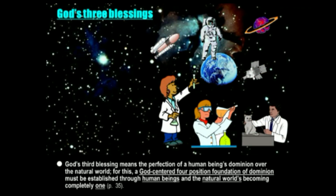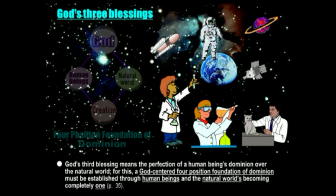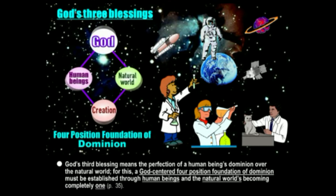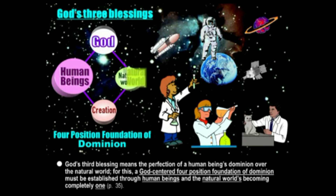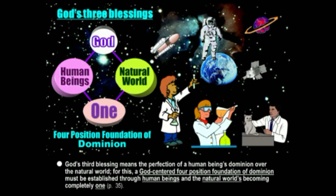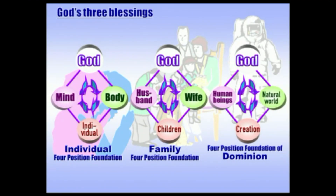The third great blessing means the perfection of the human being's natural dominion or stewardship over the natural world. For this to happen, we need another God-centered four-position foundation, where human beings and the natural world come together in complete oneness and create a world where God can truly dwell and find joy. So fundamentally, the three great blessings are: first, to mature individually and become a person of true love; second, to create a family with God at the center filled with true love; and third, dominion or stewardship over creation with God at the center and love and joy from all these.